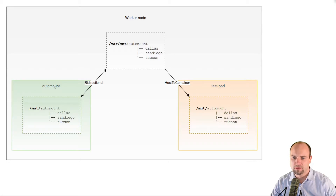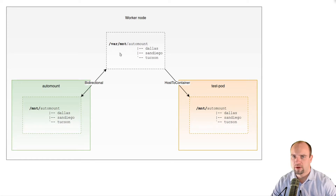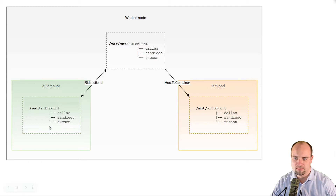The next question is what happens when a container mounts an additional file system under the already mounted subtree — for example, when the automount container mounts an NFS share below the /mount subtree. By default, mounts are not propagated between subtrees, meaning that when the automounter mounts an NFS share it would not be visible on the worker node file system at all. So instead of using default values, we need to set the mount propagation parameter to allow propagation between subtrees. To propagate NFS mounts from the automount container into the worker node subtree, we set the mount propagation parameter to bidirectional.